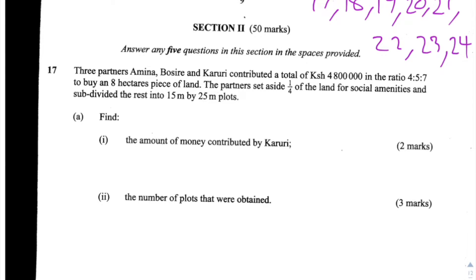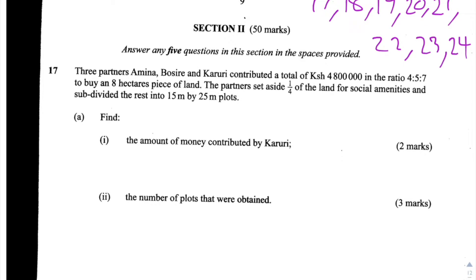We're now on to section 2 of the 2015 KCSE Maths paper. This section consists of 8 questions: 17, 18, 19, 20, 21, 22, 23, and 24. We're told to answer any 5 questions and each question is worth 10 marks, so the total for this section is 50 marks. Let's start with question 17.